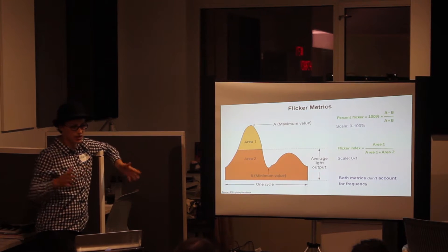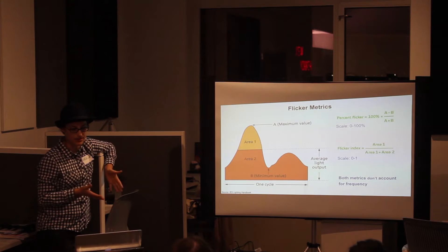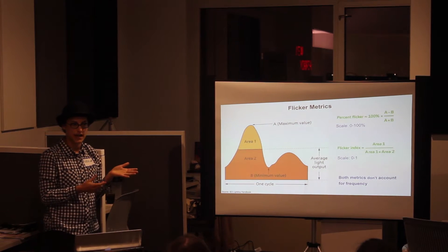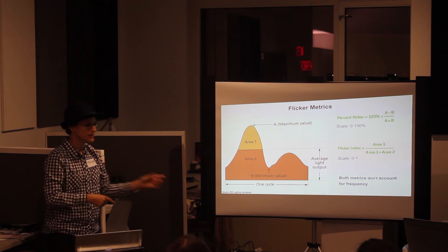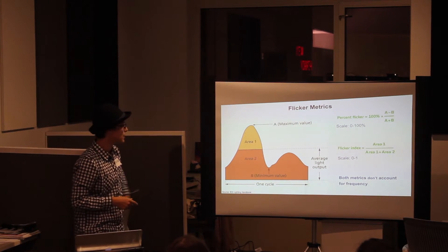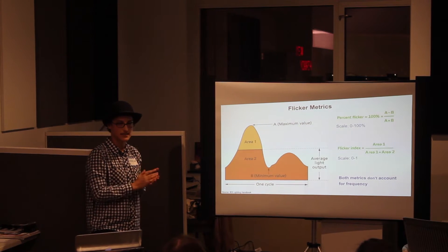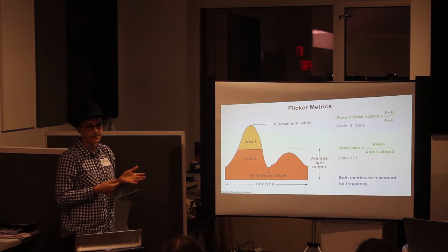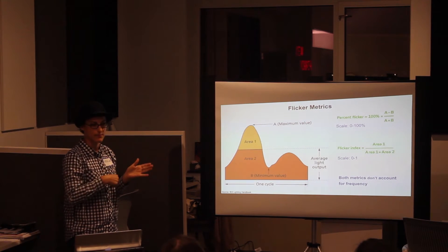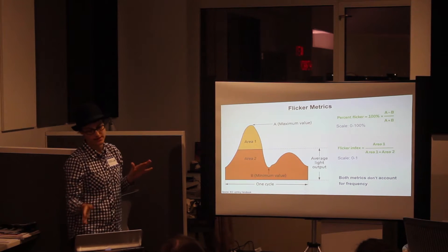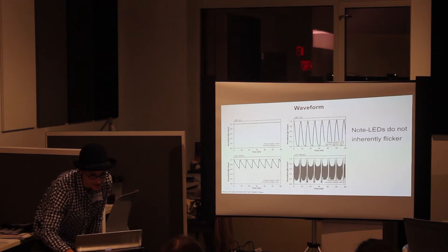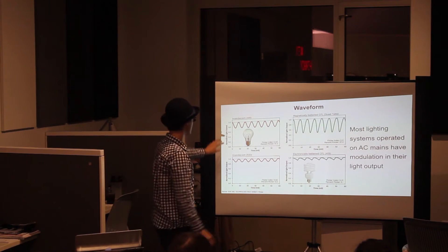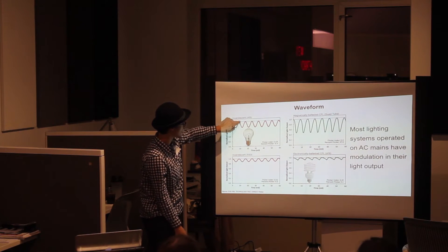To briefly go over what frequency means: in the US we have a 60 hertz frequency, meaning the power goes through a full cycle 60 times per second — in Europe it's 50. Since the power is going up and down, a full cycle means going up and coming back down.